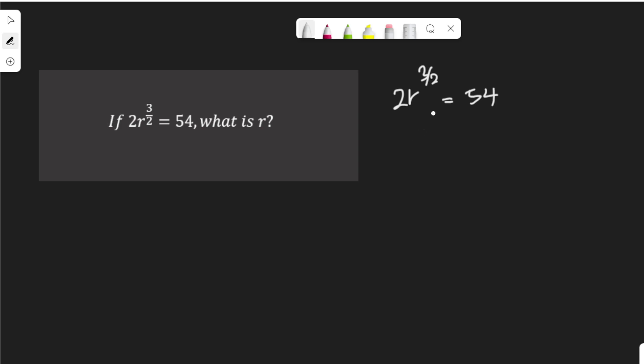Let me start by dividing both sides by 2. These two can go, and I have R to the power of 3 over 2 equal to 27.